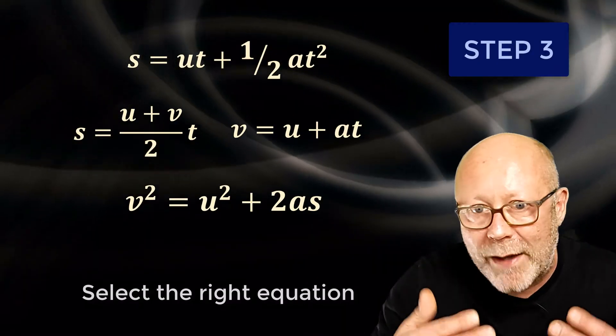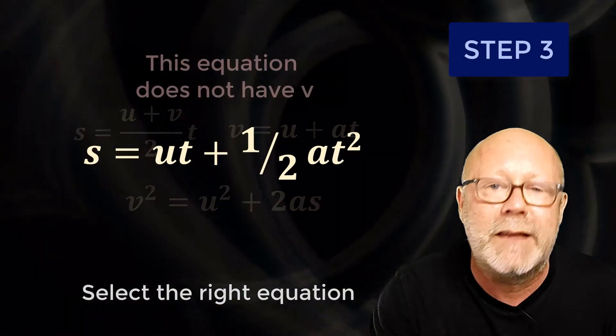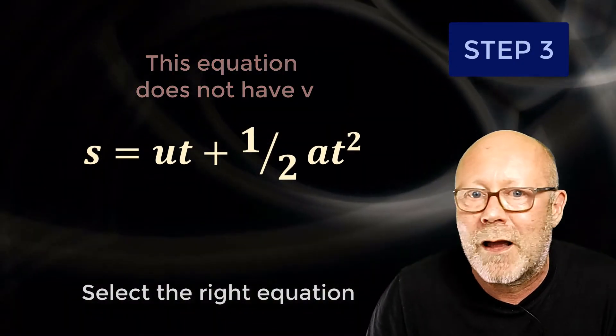In step 3, I will choose the equation that doesn't have the variable I don't care about. S equals U T plus 1 half A T squared.